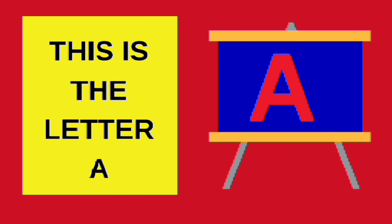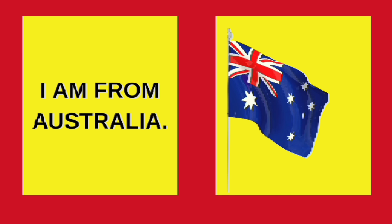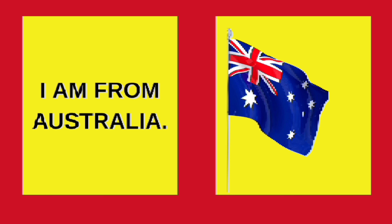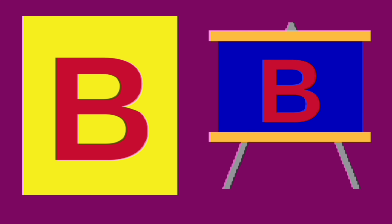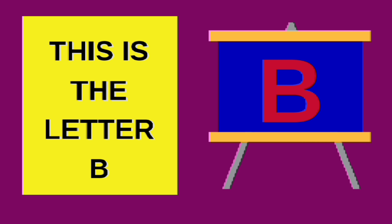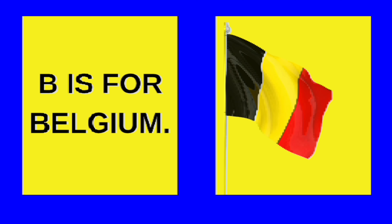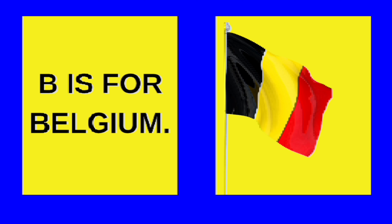A. This is the letter A. A is for Australia. I am from Australia. B. This is the letter B. B is for Belgium.